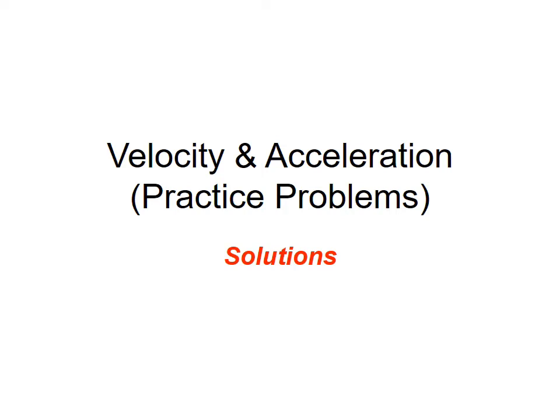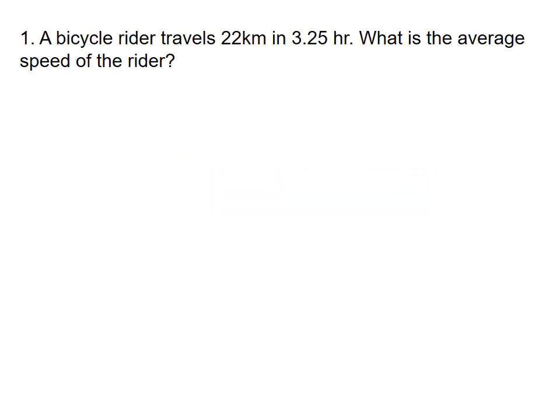This is a velocity and acceleration practice problem worksheet answer check. You are required to fix your answers according to the way I work out the problems, following the three steps: showing the equation, showing your work, and having your final answer in a box. In this section under velocity, the first problem is about a bicycle rider.